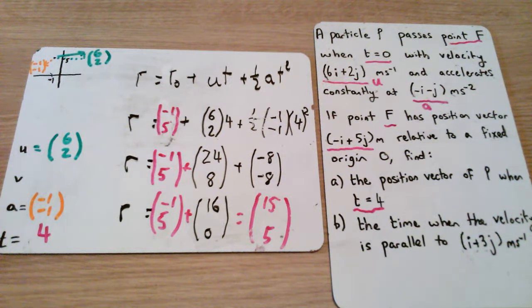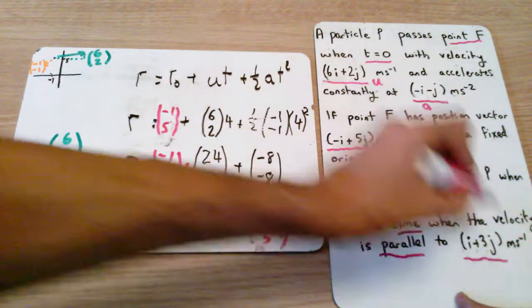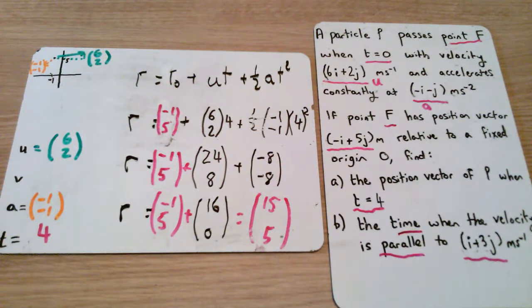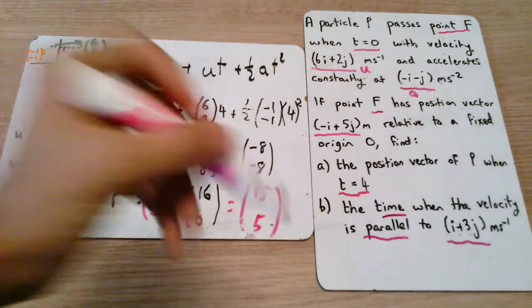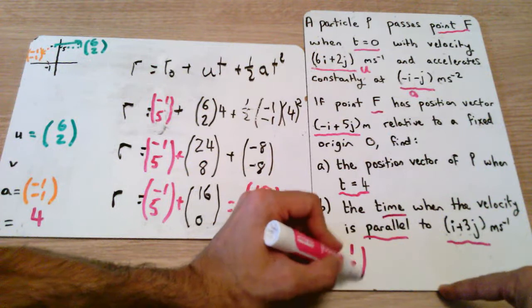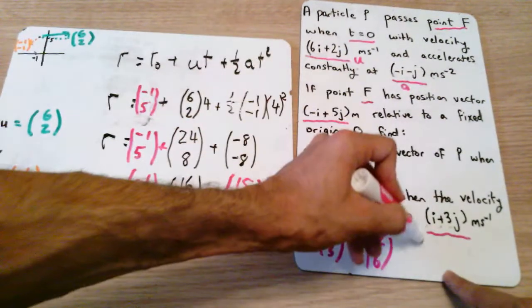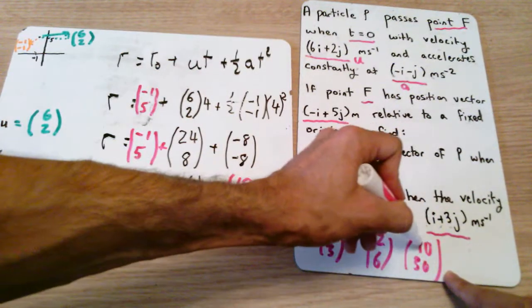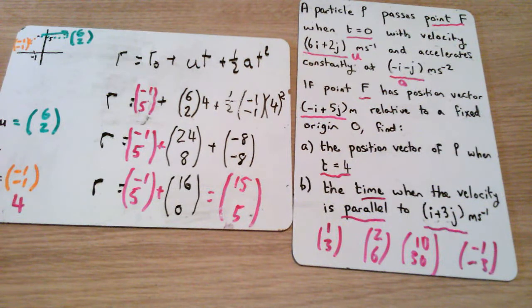Part B, however, is a little bit different. It's asking for the time when the velocity is parallel to i plus 3j. Now, if you are parallel to something, it means you're moving in the same direction. It means your vector is some form of multiple. So if I've got i plus 3j, that's a vector of 1, 3. That means I could have a vector of 2 and 6, 10 and 30, or even minus 1 and minus 3. These are all different multiples.